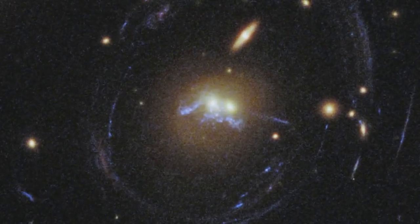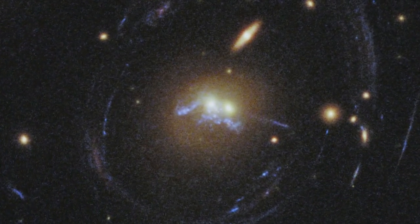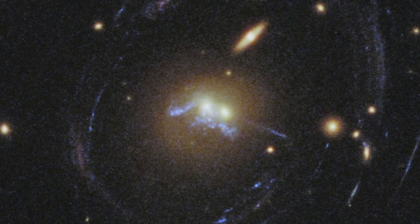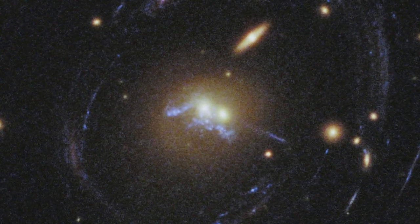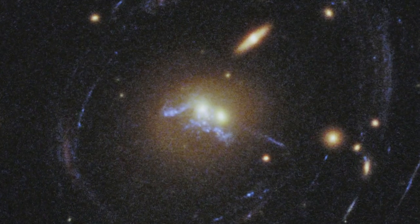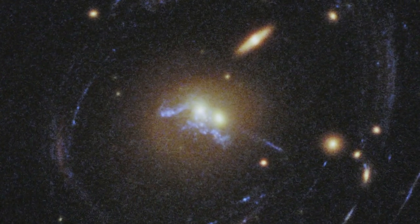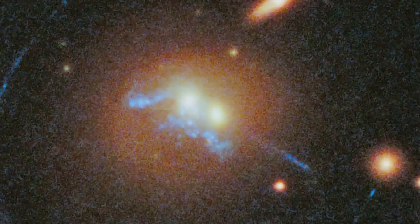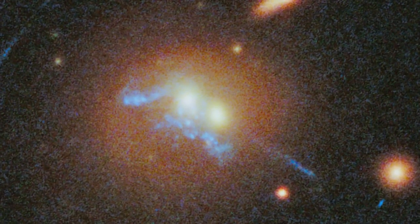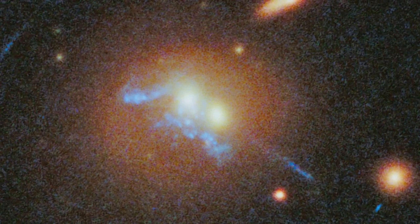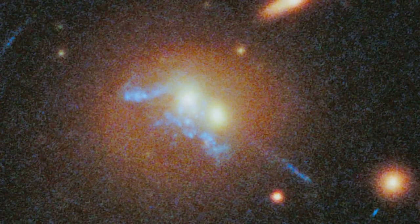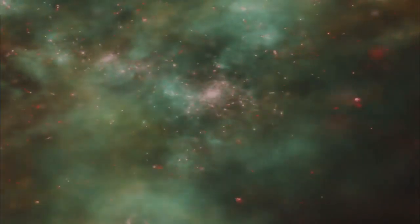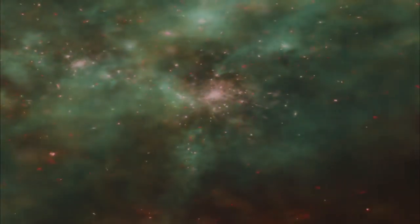These infant stellar superclusters have formed through a process called beads-on-a-string star formation, which has left them in even clumps strung out on a long gaseous filament. The clumps of stellar infants are visible here as a speckling of bright blue dots. Nineteen compact clumps are woven together with narrow filaments of hydrogen gas.